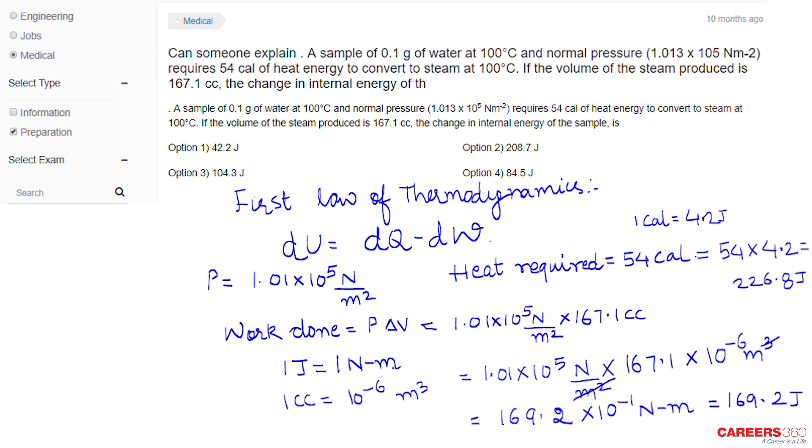We have found the work done, dW. To find the change in internal energy of the sample, dU = dQ - dW. The value of dQ is 226.8 joules minus the work done dW, which is 169.2 joules. The answer comes out to be 209.8 joules. This is the answer.